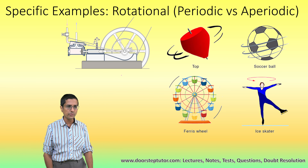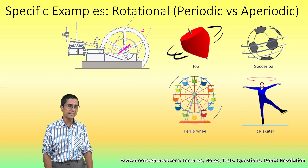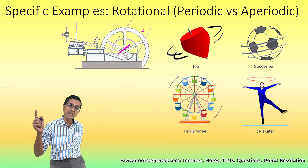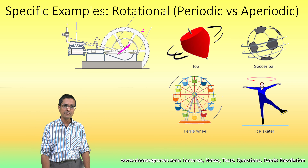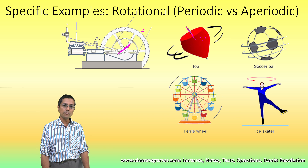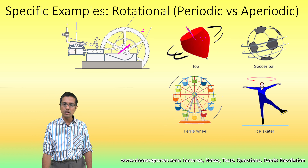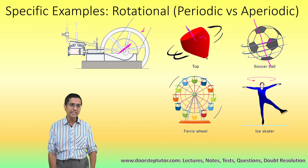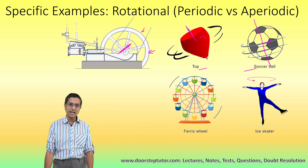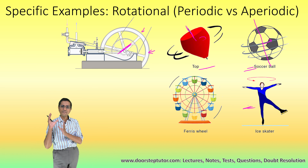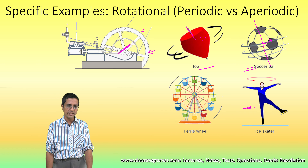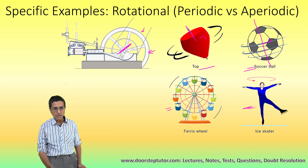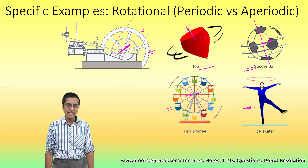In rotational motion, the axis lies inside the body itself. Look at this wheel — the line around which it rotates is at the center of the wheel, passing through the wheel itself, so it is rotational motion. Similarly, a spinning top rotates around a line passing through the top itself. A soccer ball rotating around a line passing through the ball is also rotational motion. A Ferris wheel rotating at constant speed is an example of periodic rotational motion.